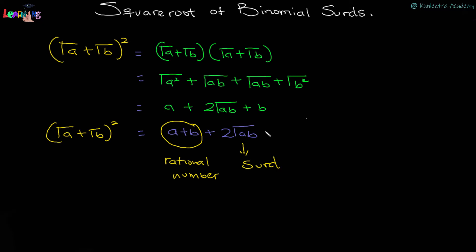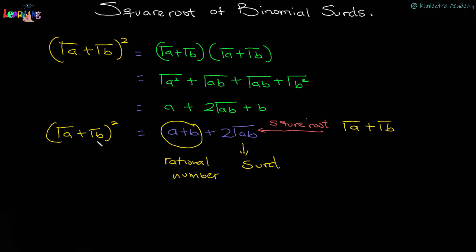Now, the square root of this value — the square root of (a + b + 2√(ab)) — will give us one of the binomial surds, which is √a + √b. This means the square of (√a + √b) will give us this expression. So the square root of a binomial surd equals a whole number part plus a surd part.